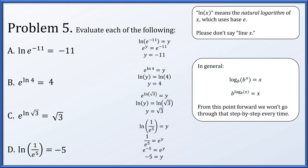In general, the logarithm base b of b to the x equals x, and b to the logarithm base b of x equals x. That's really all the work we did four times — going back and forth between these two expressions. From this point forward, we're just going to take this as something we know.